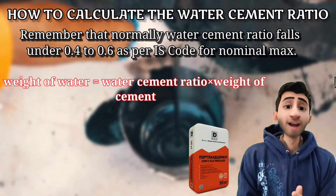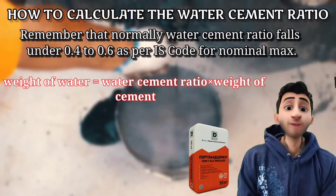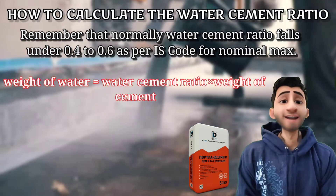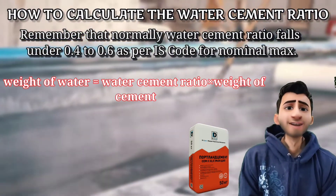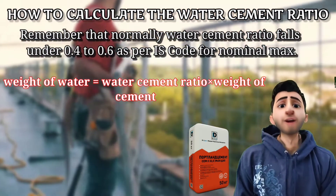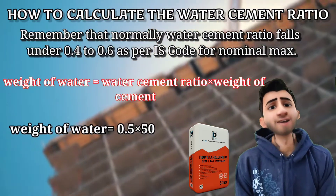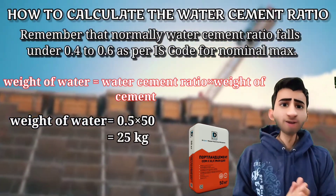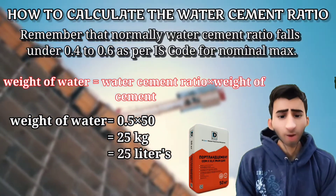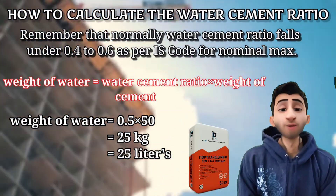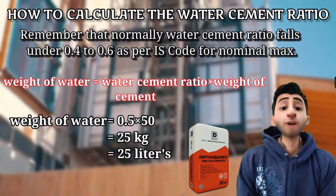Remember, one cement bag is equal to 50 kg. If we take a water cement ratio of 0.5 and calculate per bag, then weight of water equals 0.5 multiplied by 50, which gives 25 kg. Since 1 kg equals 1 liter, that means 25 liters of water are required per bag of cement.